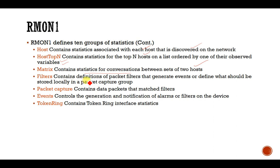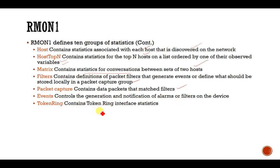Filters contains the definition of packet filters that generate events or define what should be stored locally in a packet capture. Packet Capture contains data packets that match the filter. Events control the generation and notification of alarms or filters. And Token Ring contains Token Ring interface statistics.